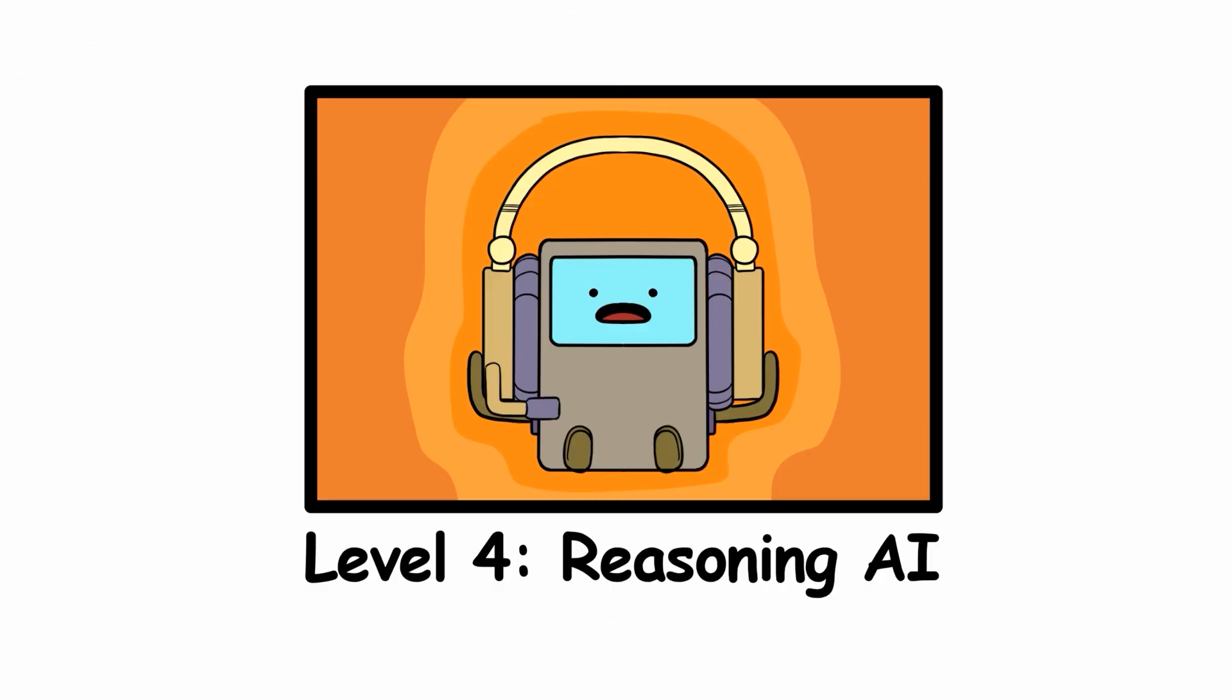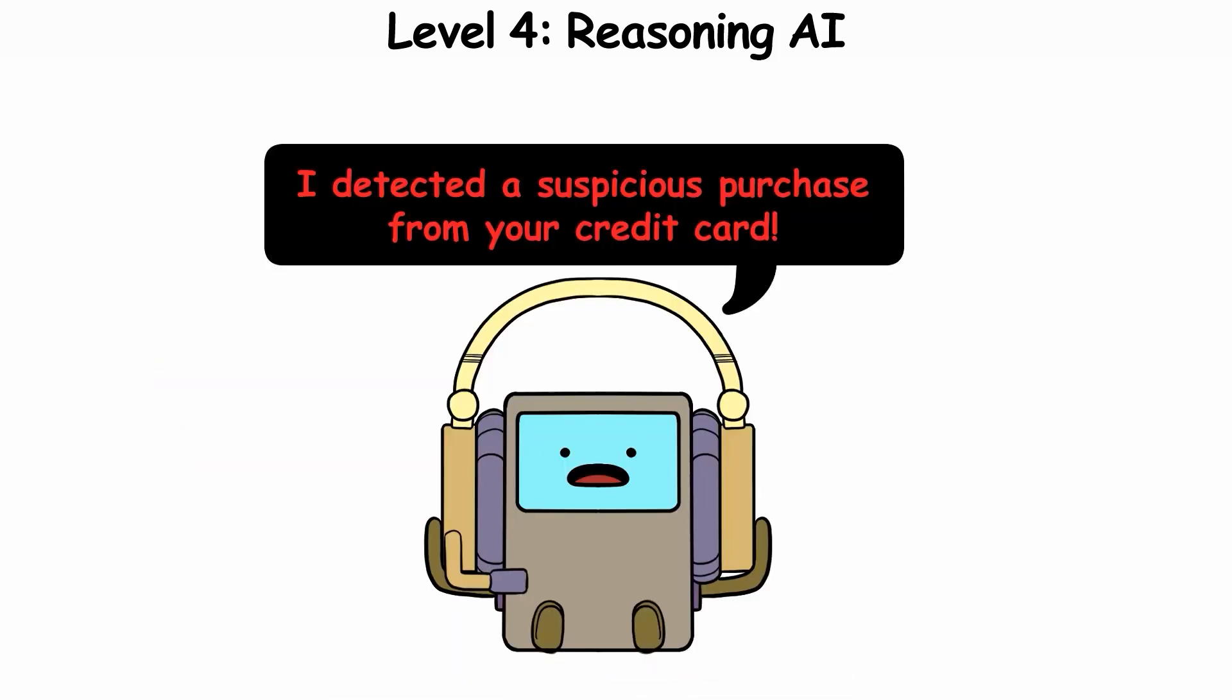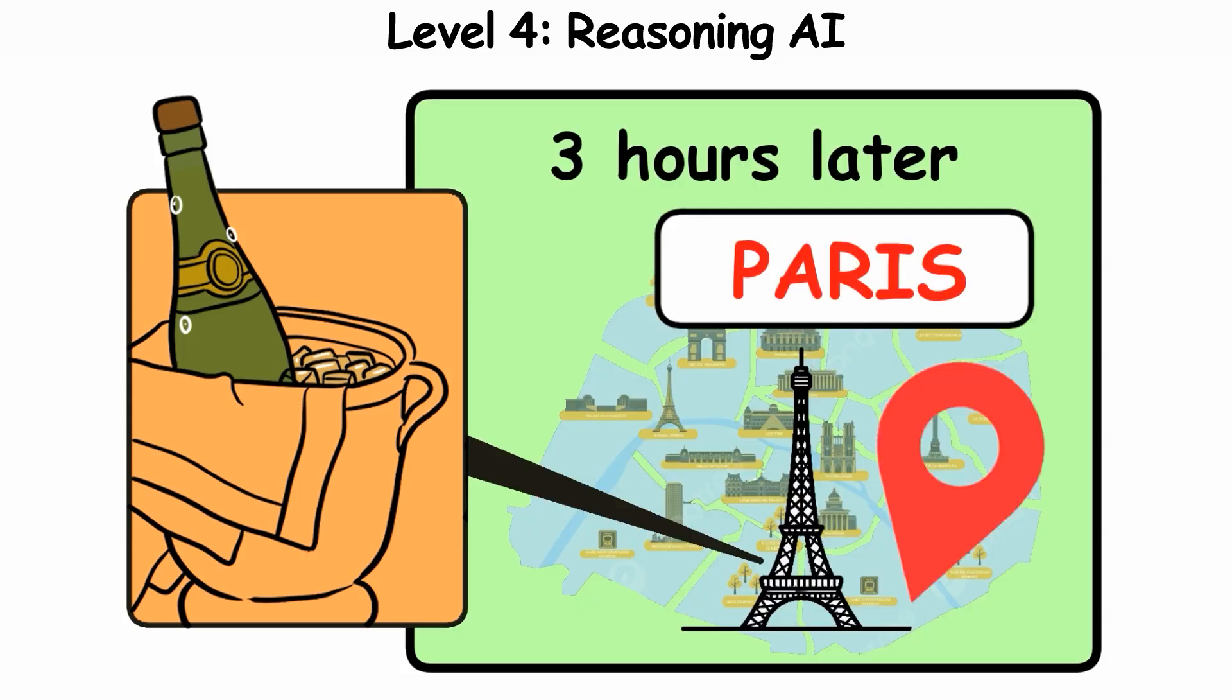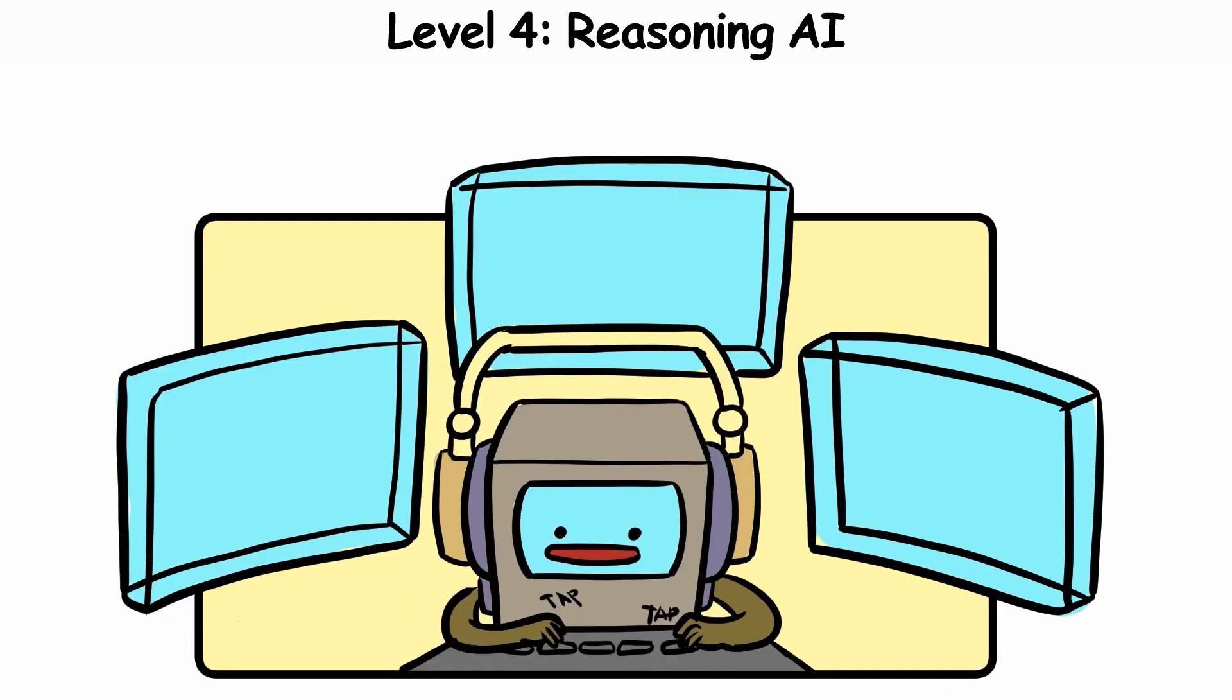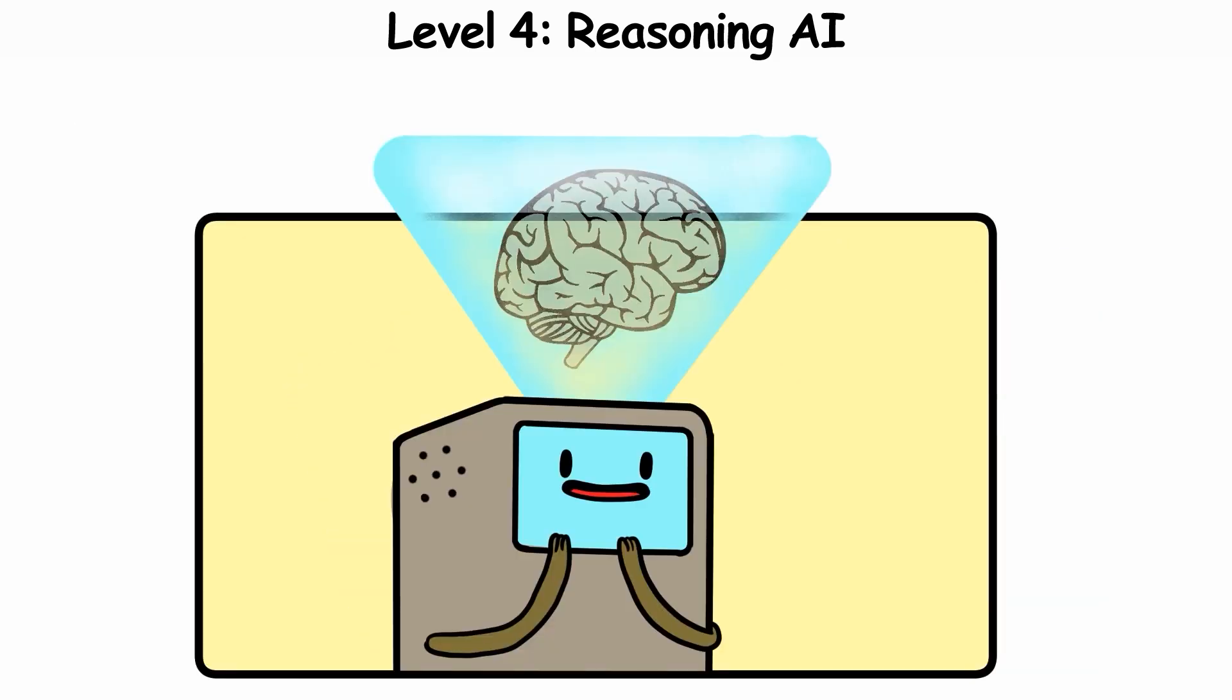Level 4, Reasoning AI. Your credit card company flags a suspicious purchase. It sees you had coffee in Texas at 8pm, then champagne in Paris three hours later, and rightly thinks something's off. This is Reasoning AI. Analyzing info, drawing conclusions, and making decisions. Essentially mimicking how we think.